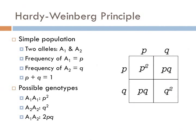We usually show the dominant allele with a capitalized letter and the recessive allele with a lowercase letter. However, we can also identify alleles with subscript. So for a simple population, there are two different alleles, identified as A subscript 1 and A subscript 2. They identified the frequency of A sub 1 with the letter P and A sub 2 with the letter Q. So if a population has 40% of its gametes with allele A sub 1, then P equals 0.4. And since there are only two possibilities, Q equals 0.6, because P plus Q equals 1.